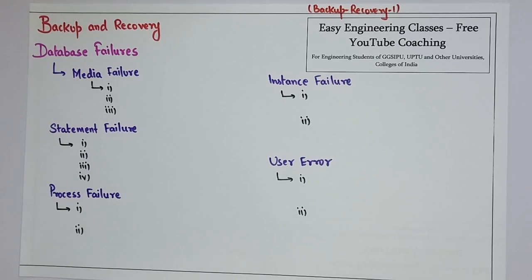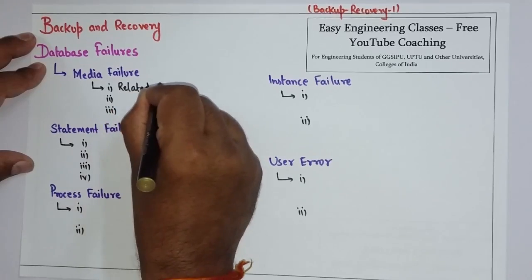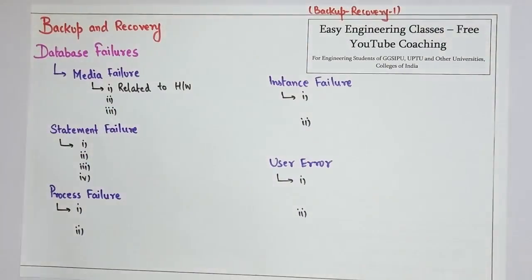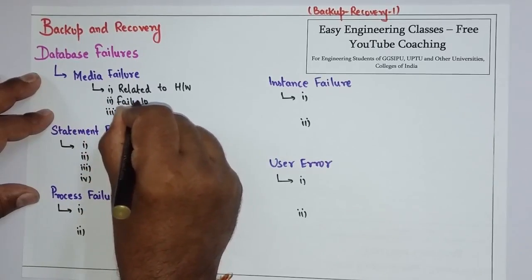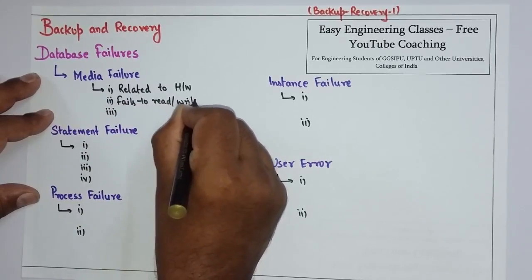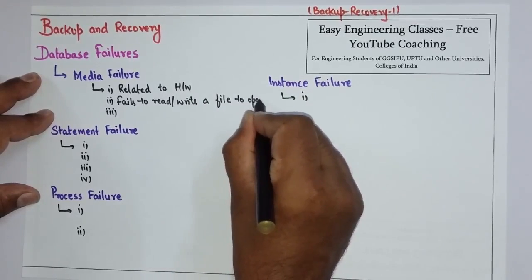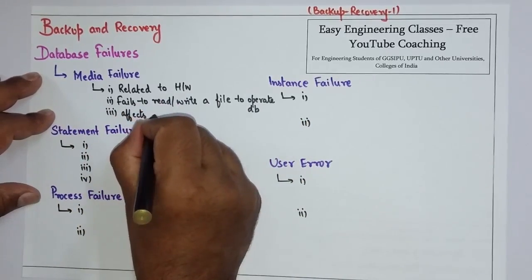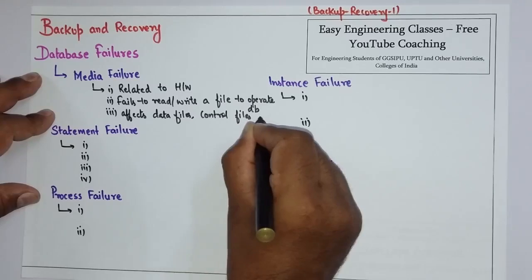First let's start with the types of database failures. There are different types of database failure. First is media failure. Media failure is related to hardware. In this type of failure, the system fails to read or write a file required to operate the database, and it affects a lot of files like data files, control files, and redo log files.